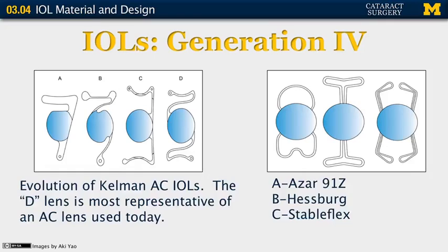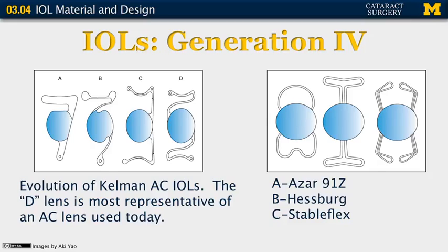The fourth generation of lenses are shown here with many examples of anterior chamber lens implants. The lenses on the left are examples of Kalman anterior chamber lens implants, and lens D is very similar to the modern anterior chamber lens. All of these are open loop haptics so that the haptics are quite flexible, allowing the lenses to be very well tolerated in the anterior chamber. Lenses on the right have closed loop haptics and were associated with corneal endothelial failure and chronic inflammation. The fifth generation also includes lenses for posterior chamber implantation with prolene haptics or three-piece lenses, with familiar C-loop and J-loop type designs.